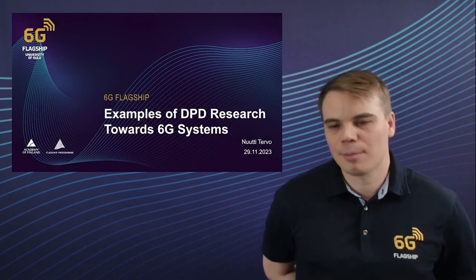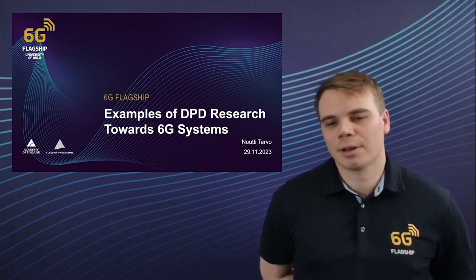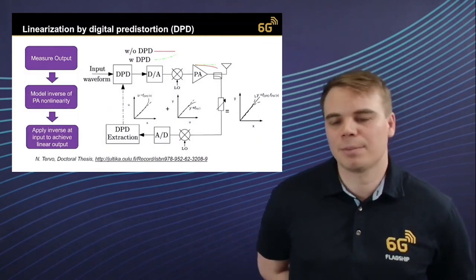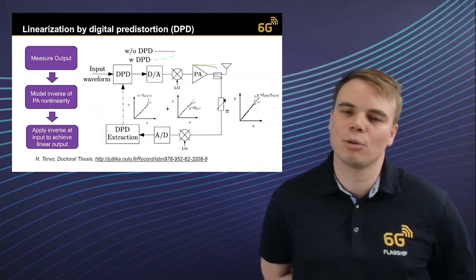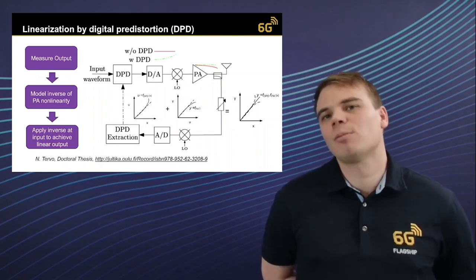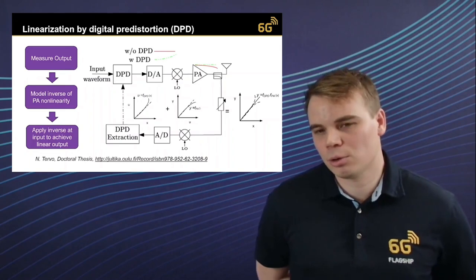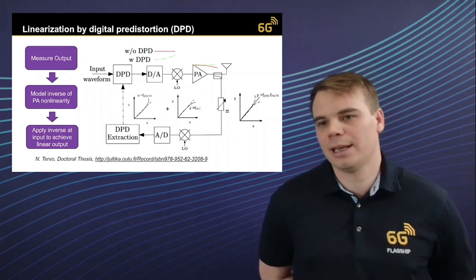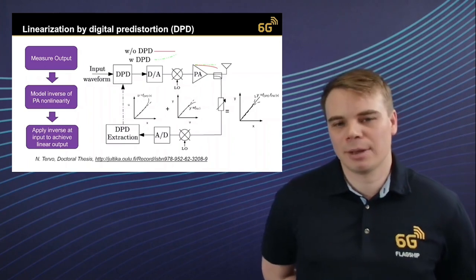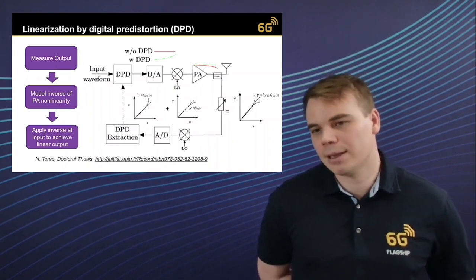The next topic is PA nonlinear distortion and using digital pre-distortion (DPD) to compensate for it in higher-frequency systems. Power amplifiers cause nonlinear distortion which can be seen as increased adjacent channel power ratio and decreased signal quality in terms of error vector magnitude. In digital pre-distortion, you make a feedback receiver to measure the PA behavior in real time, model the inverse of this PA nonlinear behavior, and apply the inverse at the input to compensate PA nonlinear distortion and achieve a linear signal at the output.